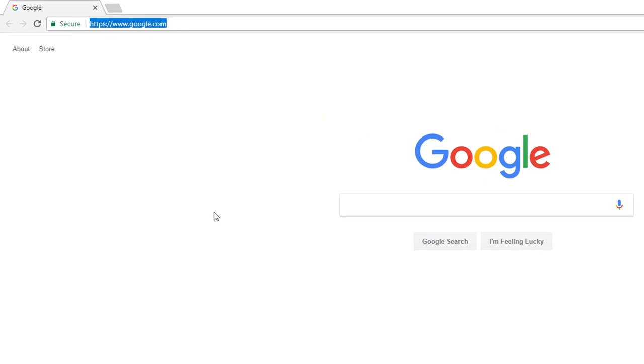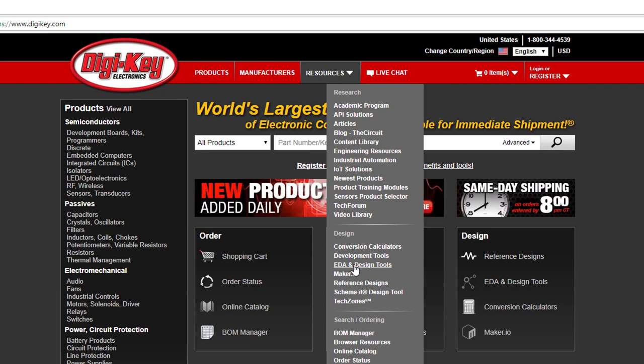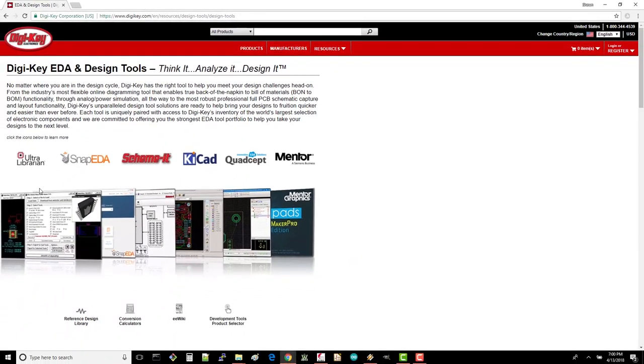If you need additional resources, DigiKey's site can help you out. Head to digikey.com. Under Resources, click EDA and Design Tools. Here, you can get more information about electronic design automation tools, including KiCAD.